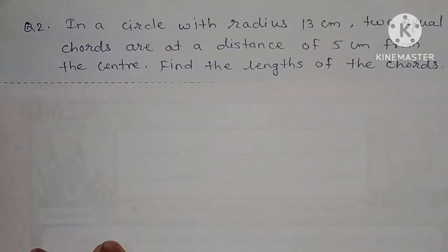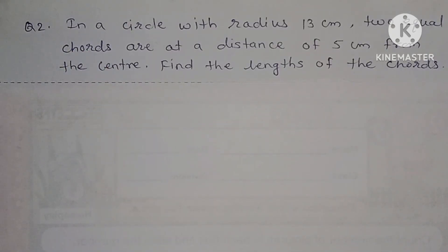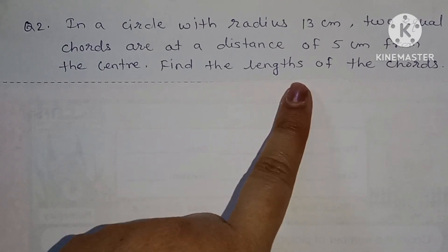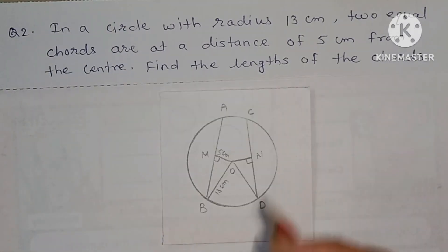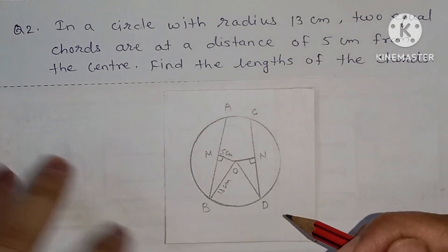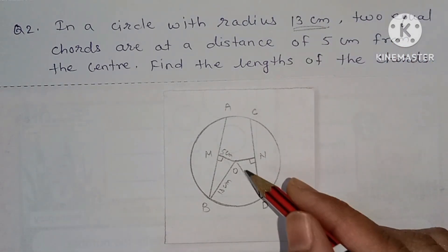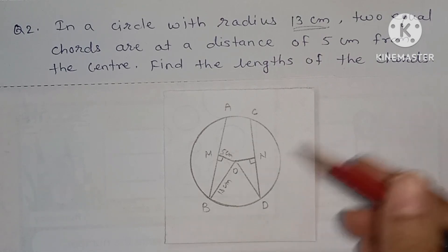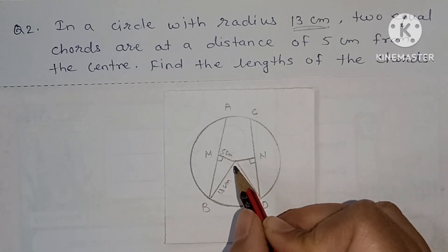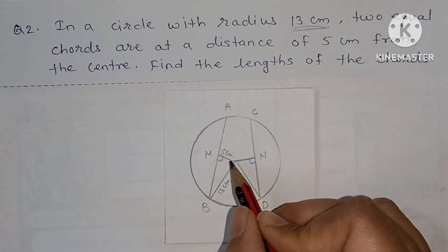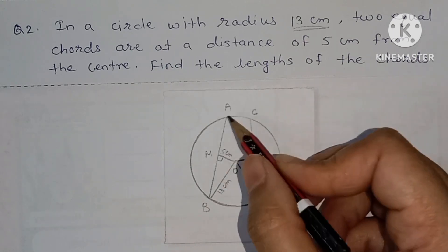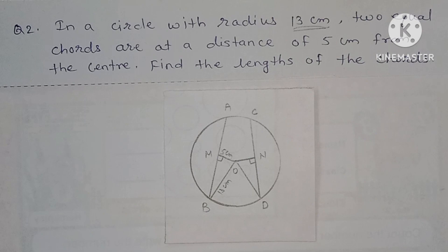Now question number two: in a circle with radius 13 centimeters, two equal chords are at a distance of 5 centimeters from the center. Find the length of the chord. Here is the circle with center O; AB and CD are the chords, radius OB and OD are both 13 centimeters, and the distance from the center to each chord OM = ON = 5 centimeters. We need to find the length of AB and CD.